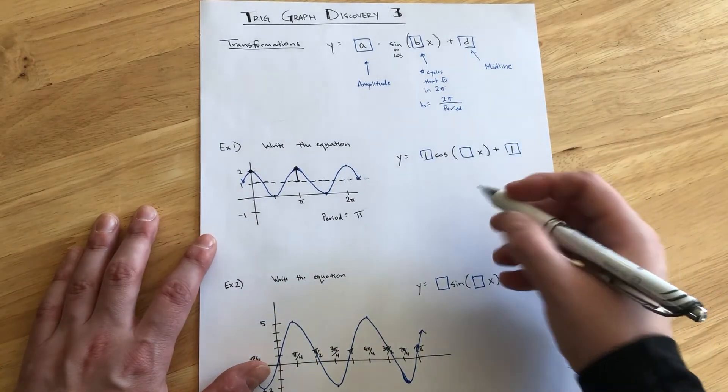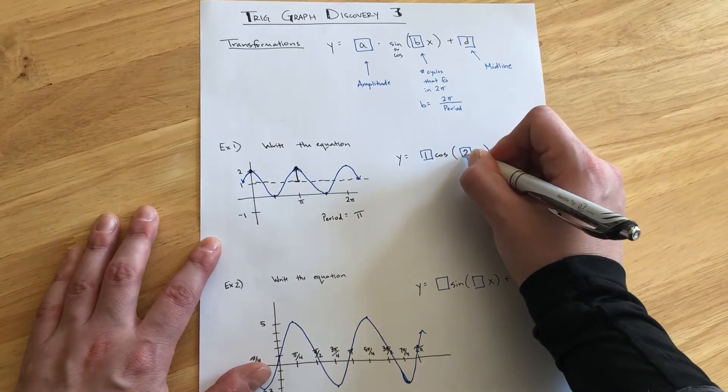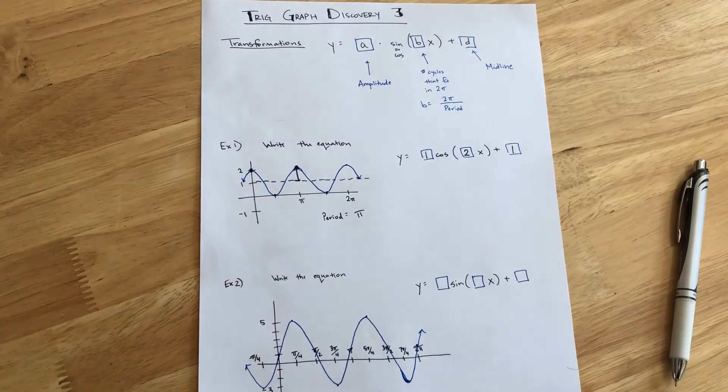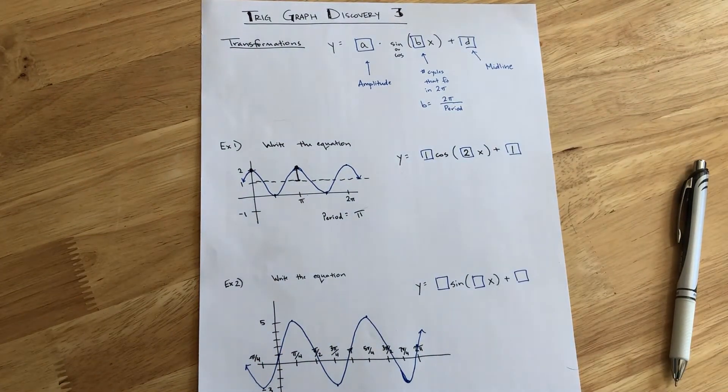So, that means that our B parameter is 2 because 2 full cycles fit. It's twice as frequent as the original cosine graph.